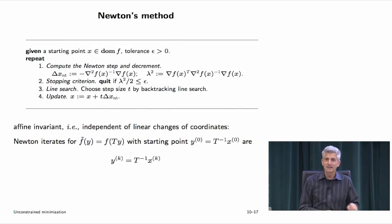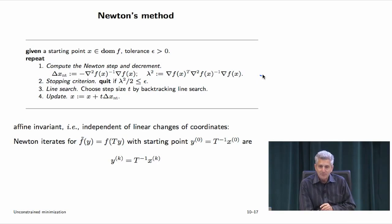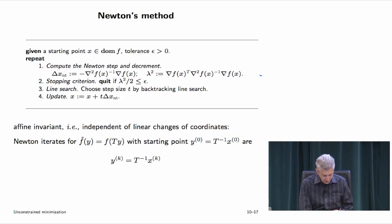Here's Newton's method: you compute the Newton step Δx_nt = −H^{−1}∇f and the Newton decrement λ²/2 = ∇f^T H^{−1} ∇f / 2. The real stopping criterion is: if λ²/2 is less than a tolerance, break.